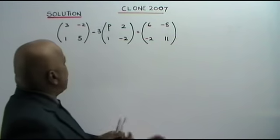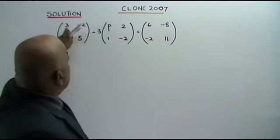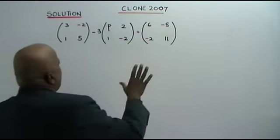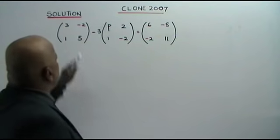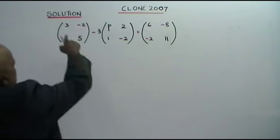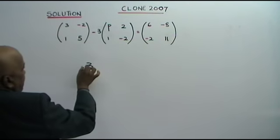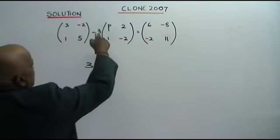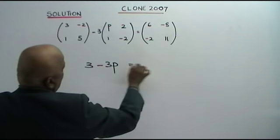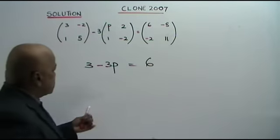Where is P? P is the first term here, the first number. So what we do? P has connection with all the first numbers. The first number here is 3, 3 minus 3 times P, 3P, equals to the first number here which is 6.